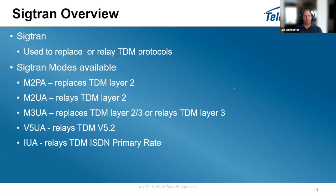In general, SIGTRAN is used to replace or relay the TDM protocol. It's a method of forwarding the older TDM-type signaling to the newer IP-type signaling. They encompassed that into a protocol called SIGTRAN, which is actually multiple protocols. Here I listed some of them: M2PA, which replaces TDM layer 2, and M2UA, which relays the TDM layer 2.